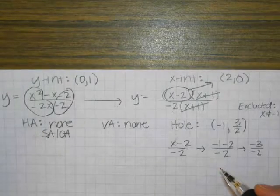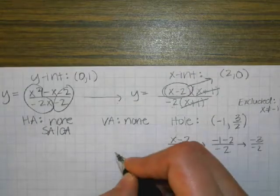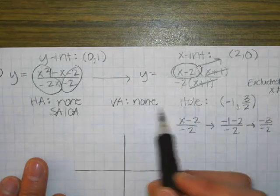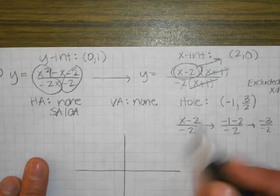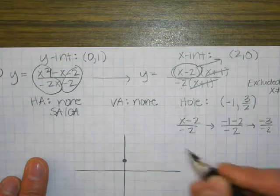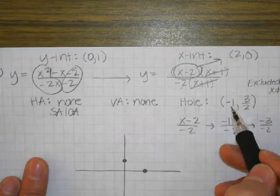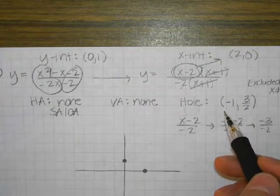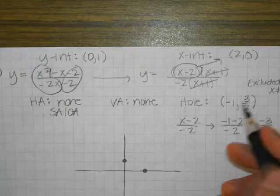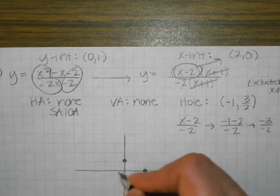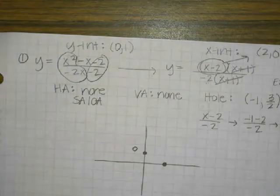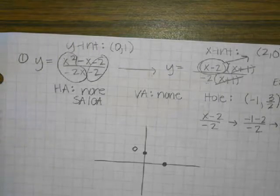So let's go ahead and graph all this stuff that we just found. We don't have any asymptotes to draw — it was none and none. But we do have a Y-intercept of 0, 1. We have an X-intercept of 2, 0. And we have a hole where the X-coordinate is negative 1 and the Y-coordinate is 3 over 2. And 3 over 2 might be kind of hard to graph, so the decimal is 1.5. So I'm going to graph it as a circle that's not filled in.